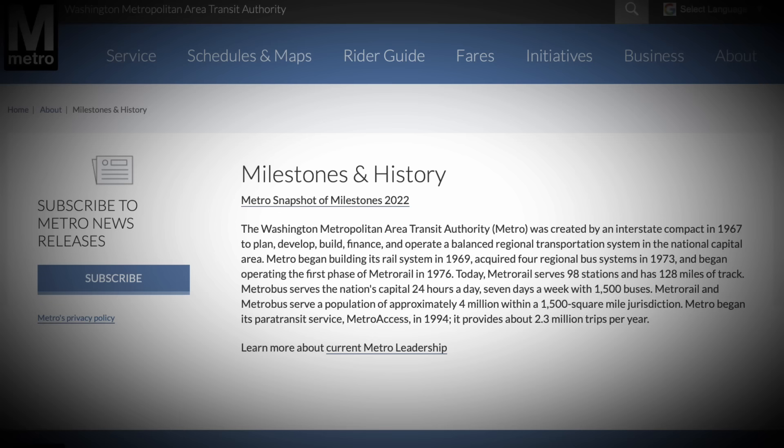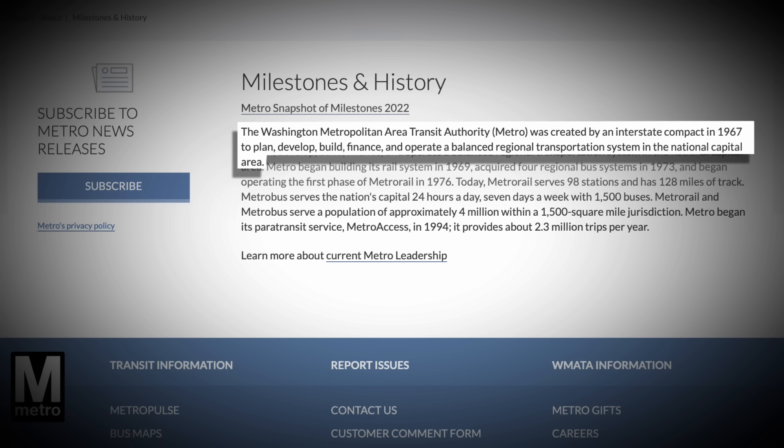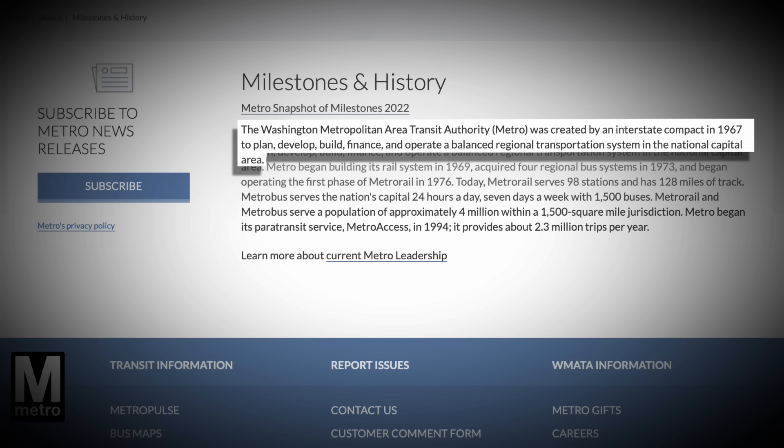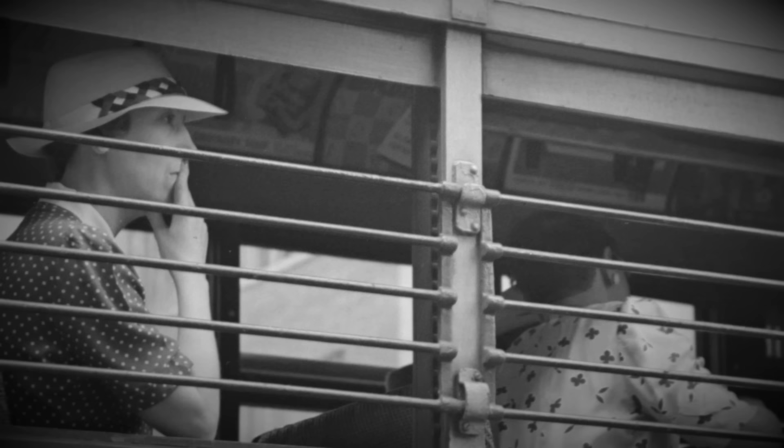Our story begins in the 1960s. The Washington Metropolitan Area Transit Authority, Metro, was created by an interstate compact in 1967 to plan, develop, build, finance and operate a balanced regional transport system in the national capital area. The capital city needed a better public transport system, and an all-new rail network was planned, integrating buses with the new metro system.